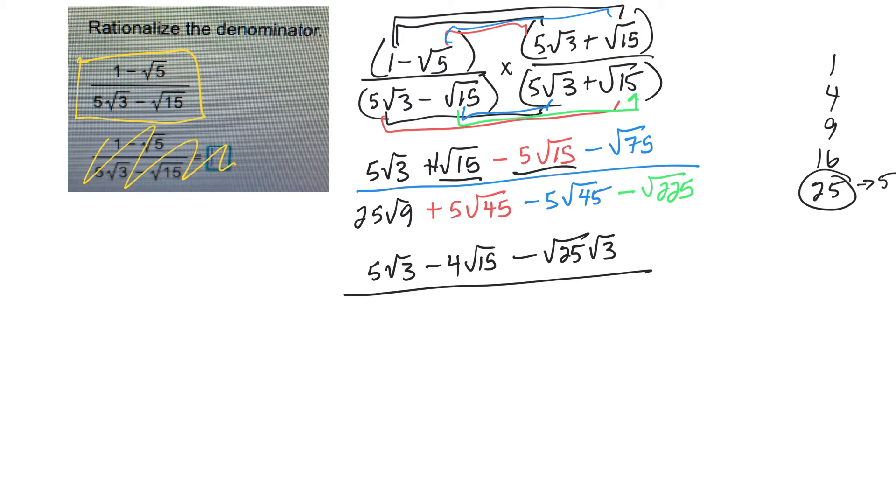Then I have 25, square root of 9, I know it's just 3. 5 root 45 minus, oh, these cancel. And then I have minus, 225, square root of 225. I think that one comes out evenly too. How does 115? Just as 15.